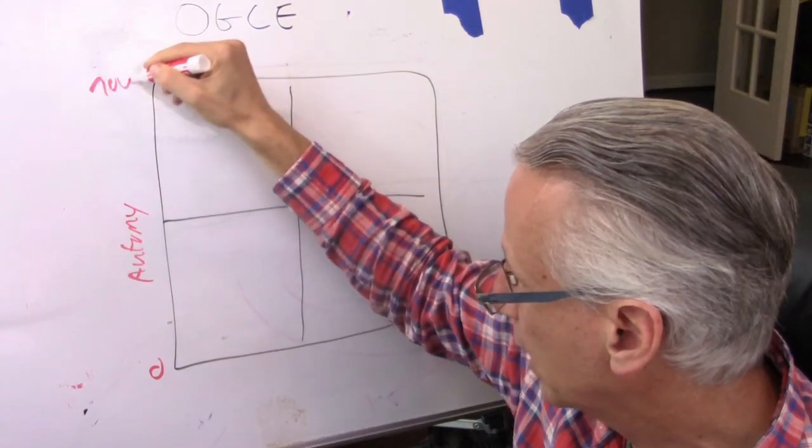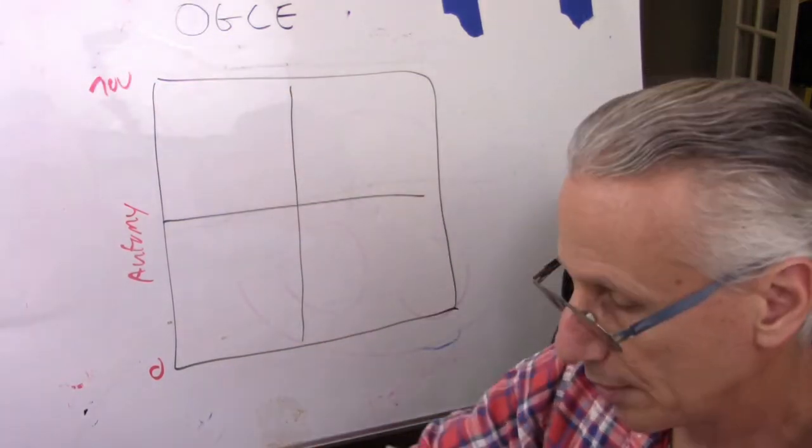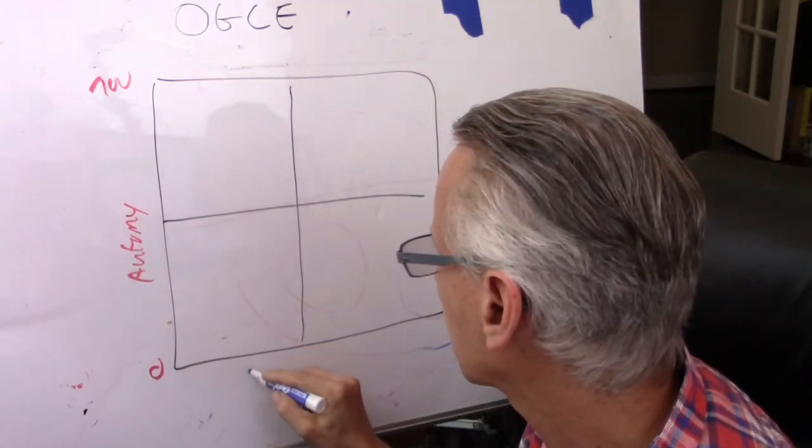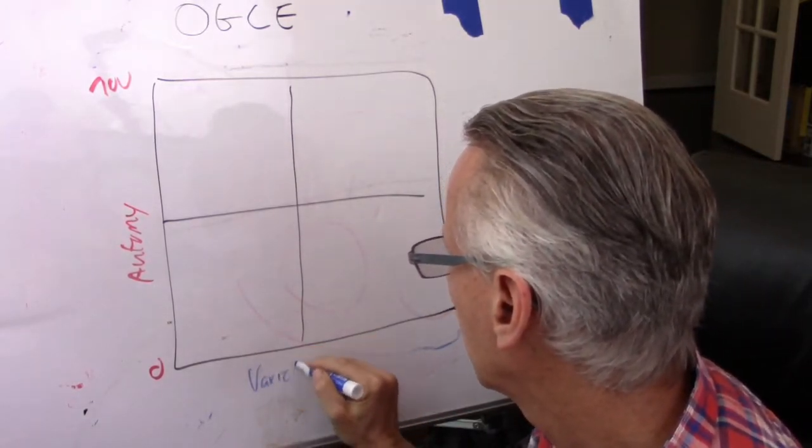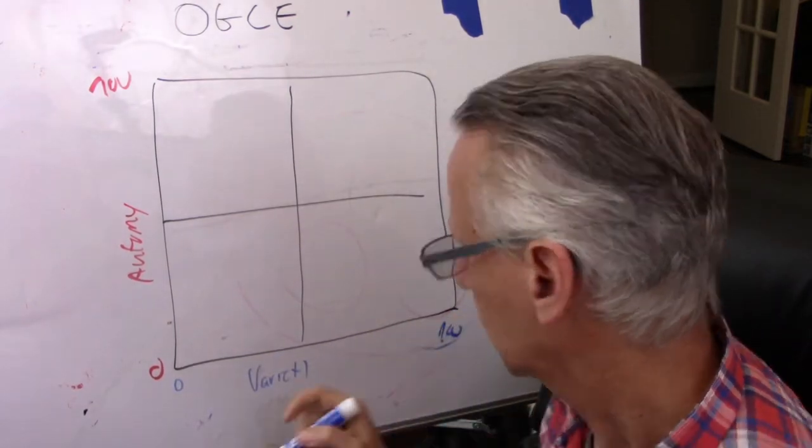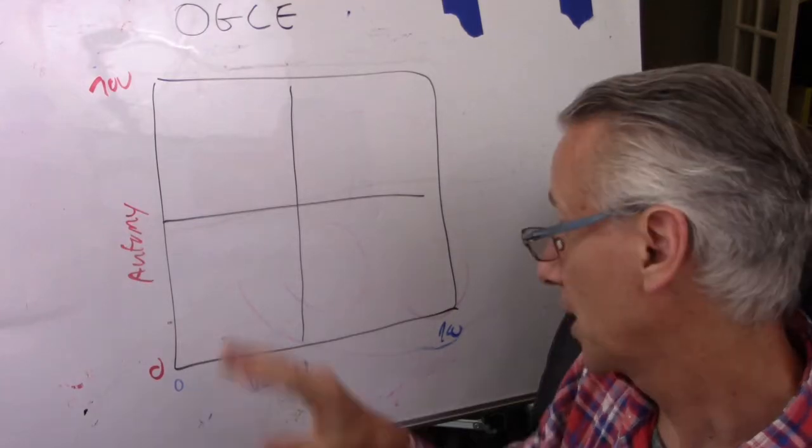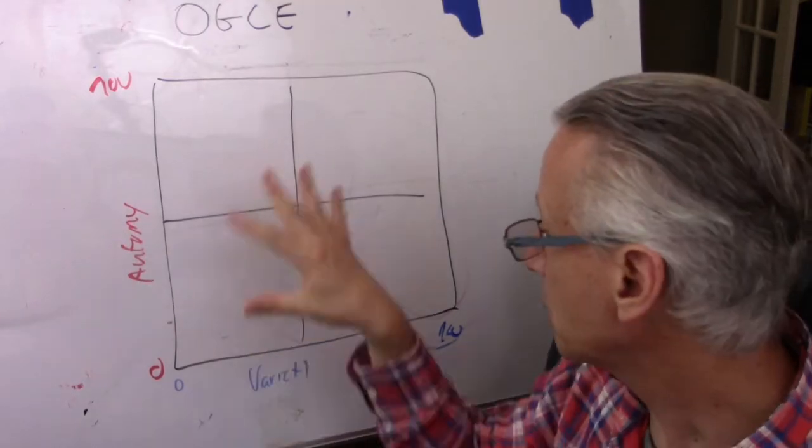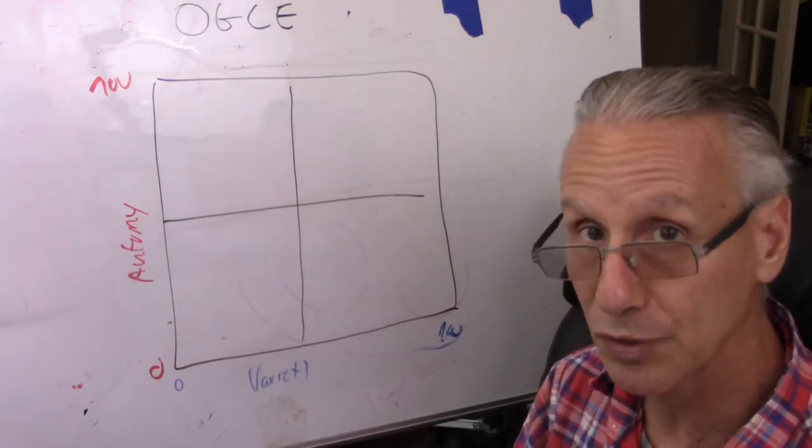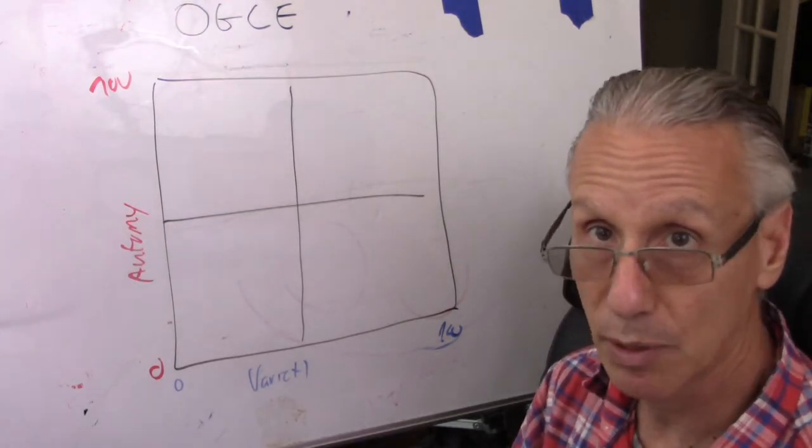And on the other axis, we have the level of variety that organization will have. Low variety, high variety, that's the model in a nutshell. Now, it doesn't matter in which coordinate you start, I'll start with one just for the sake of simplicity.